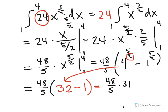So we are now going to have 48 fifths times 31. Nothing's going to cancel in that particular case, so we're just going to have to multiply the two numbers together and divide by 5, and we're going to get about 297.6. Not a very nice integral, but that's what it is.